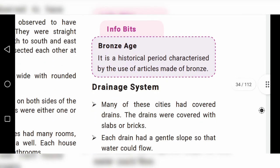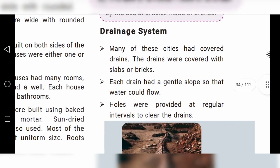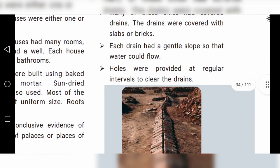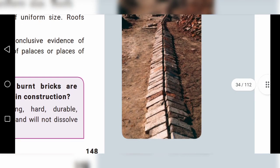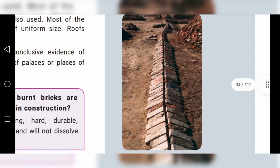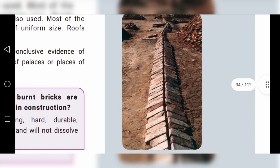Drainage System: Many of the Indus Civilization cities had covered drains. The drains were covered with slabs or bricks. The people of the Indus Civilization used this type of advanced drainage system.